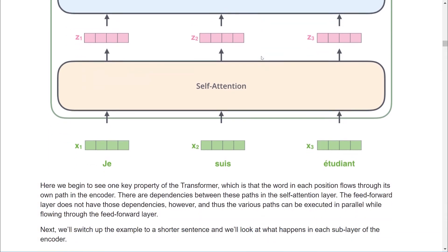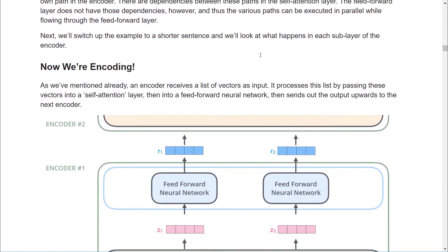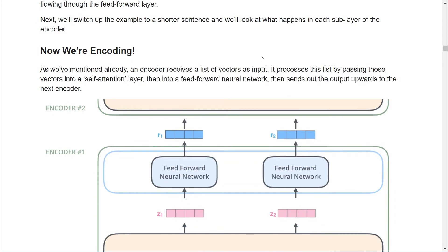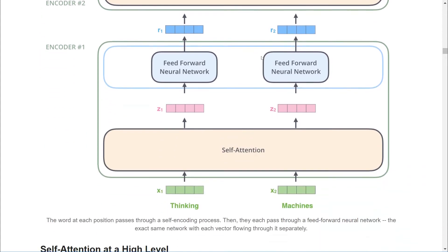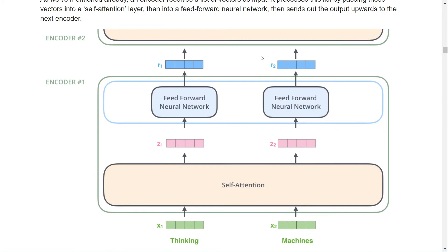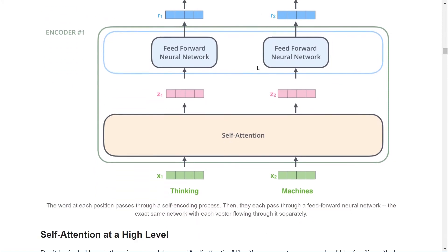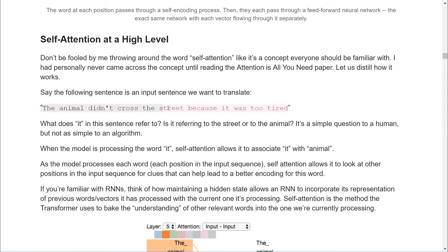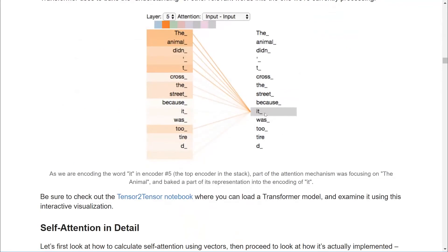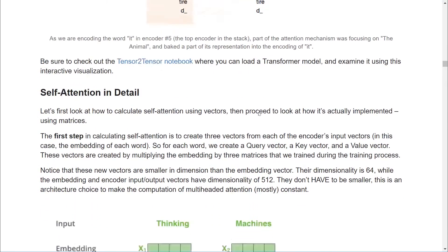At a high level, what attention does is for every given token, it scores all the other tokens as to how important they are to understand in the context of that word. We have self-attention, and we have encoder-decoder attention, which maps the output tokens to the relevant input tokens. For example, we have the sentence, the animal didn't cross the street because it was too tired. Is it referring to the animal or to the street? In this example, we can clearly see that the network has learned that it is definitely referring to the animal.